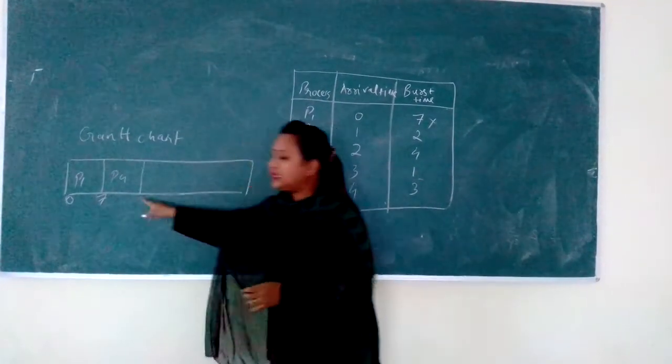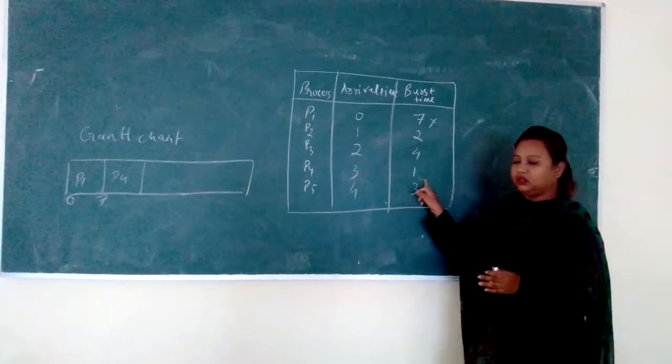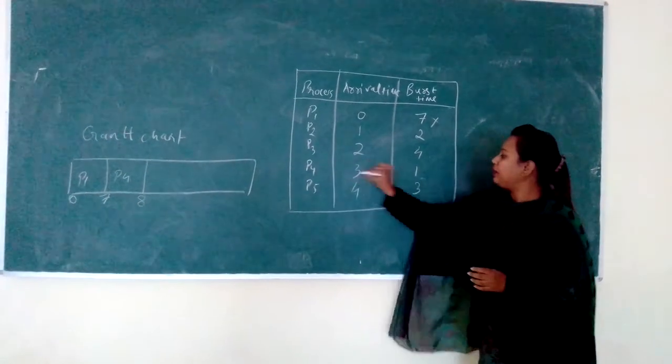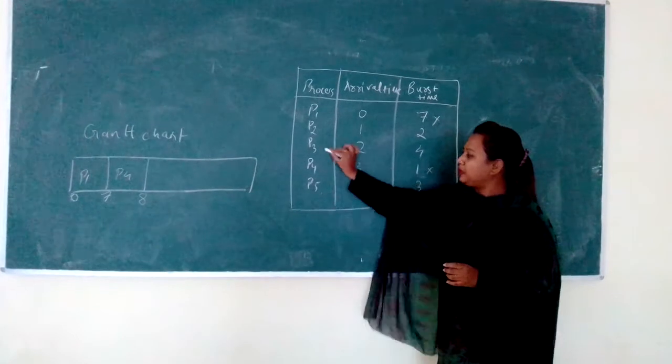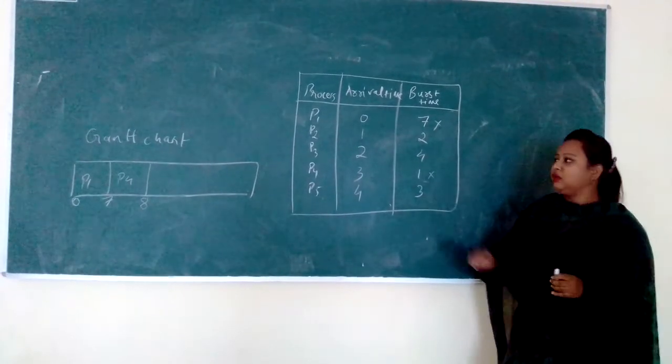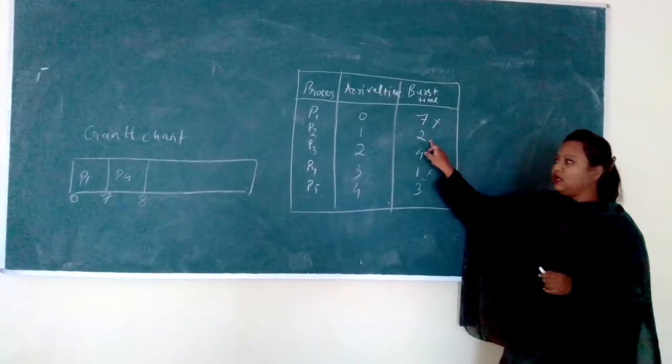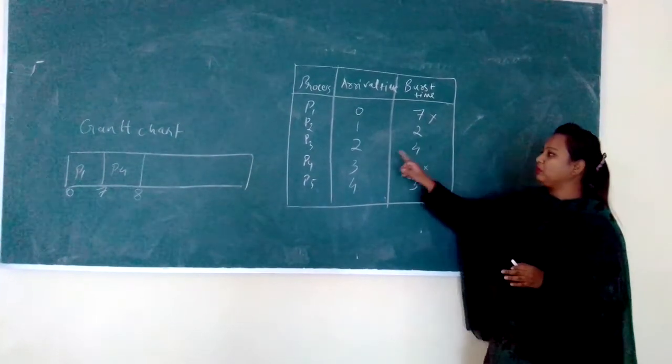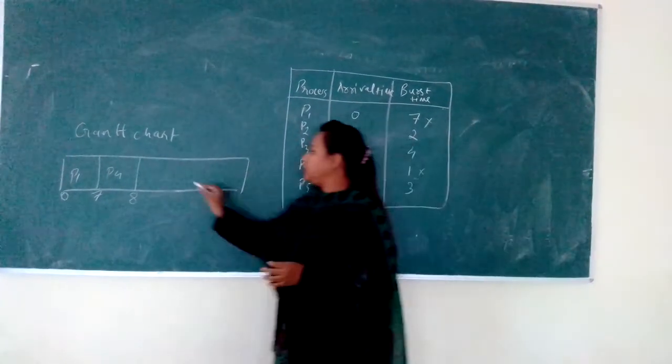The burst time for P4 will now become 7 plus 1, which is 8. So here P4 also gets completed. Now we are left with P2, P3 and P5. CPU will search for P2 and find 2 seconds, and it is very less in the burst time compared to P3 and P5. So it will assign P2 in the Gantt chart.